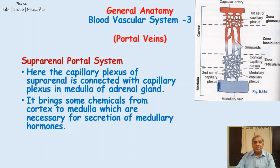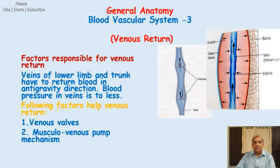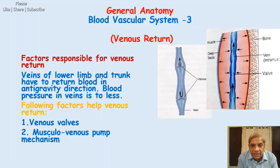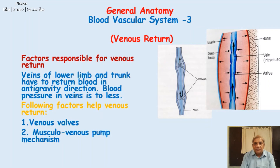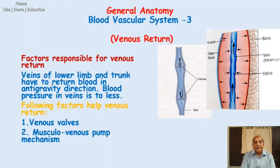Now I move to the next slide. We have finished with the portal system of veins in our body. We come to the second aspect of the blood vascular system — the factors responsible for venous return. Veins return the blood back to the heart from where it came through arteries. The blood was flowing with speed because of blood pressure generated by the systole or contraction of the ventricles. By the time it reaches the capillaries, the blood pressure diminishes significantly — it must be one-tenth or less than what it was at the large arteries. The systolic blood pressure is 120.